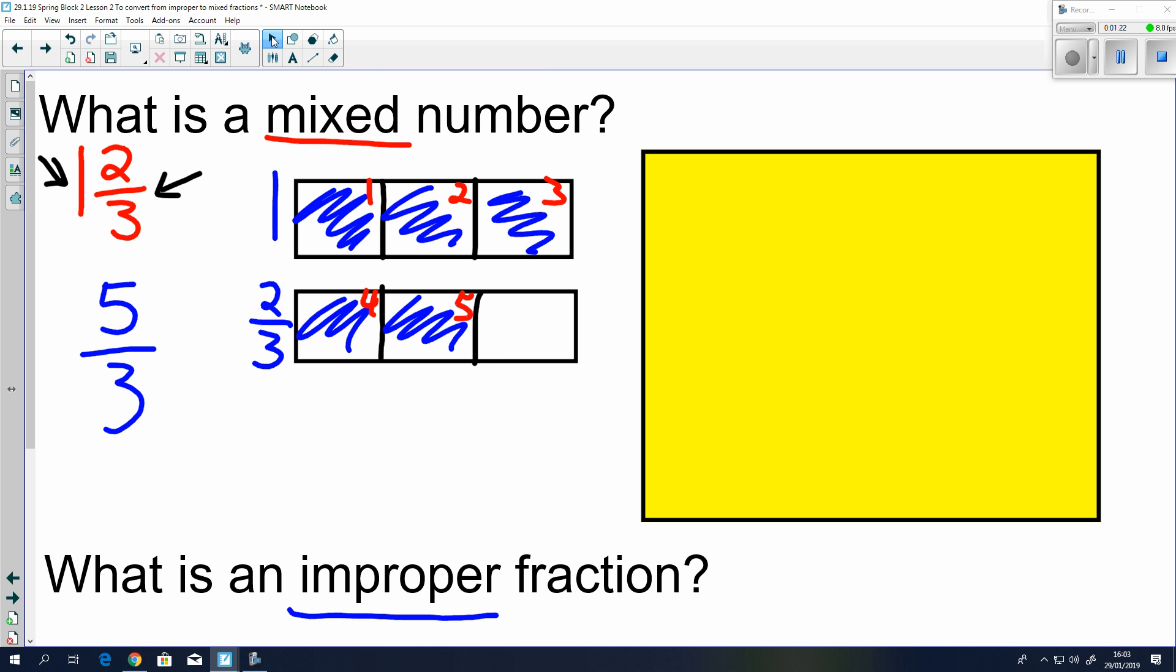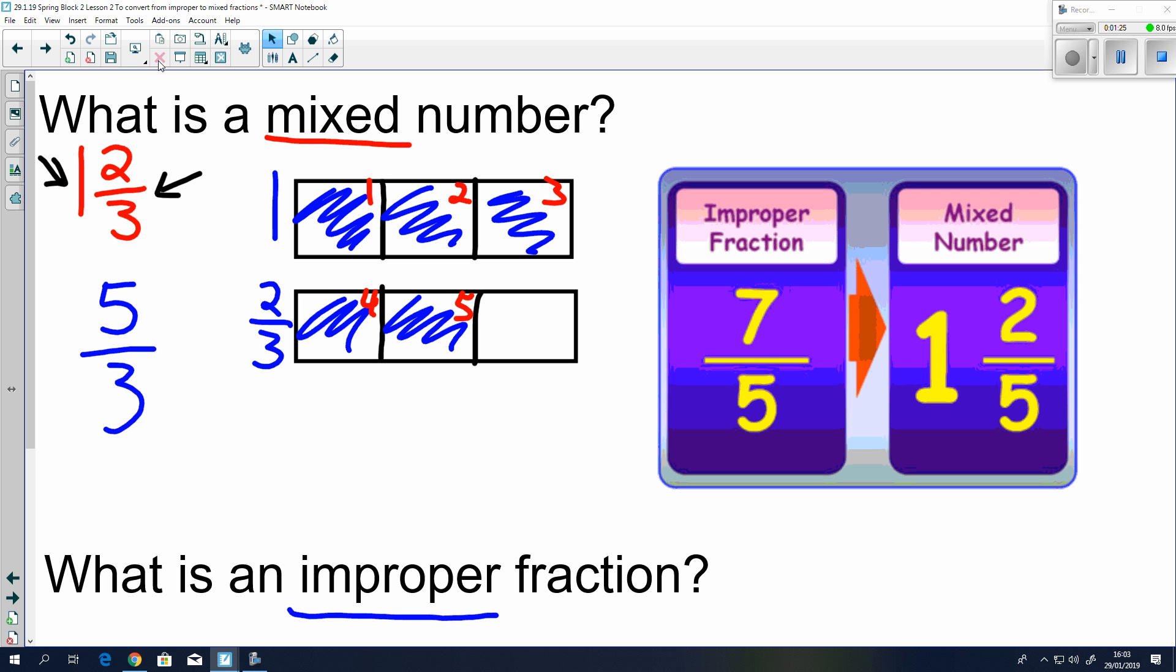If we can have a look here at another example, 7 fifths is the same as 1 and 2 fifths. That's essentially the main difference between a mixed number and an improper fraction. Improper, the numerator is larger than the denominator. And a mixed number has got a whole number and then the fraction next to it.